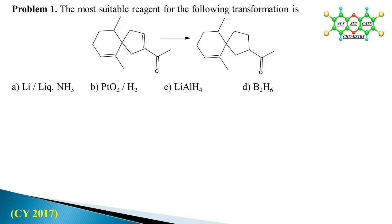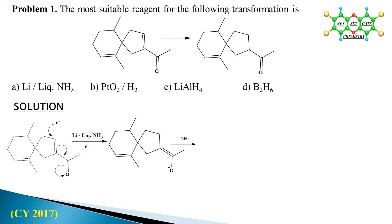The solution for this problem: we can easily neglect options B, C, and D. Hydrogenation over platinum oxide and lithium aluminum hydride both reduce all double bonds in the transformation. Diborane easily reduces the alkene group. So the most probable option is lithium in liquid ammonia — this is the correct reagent for selective reduction.